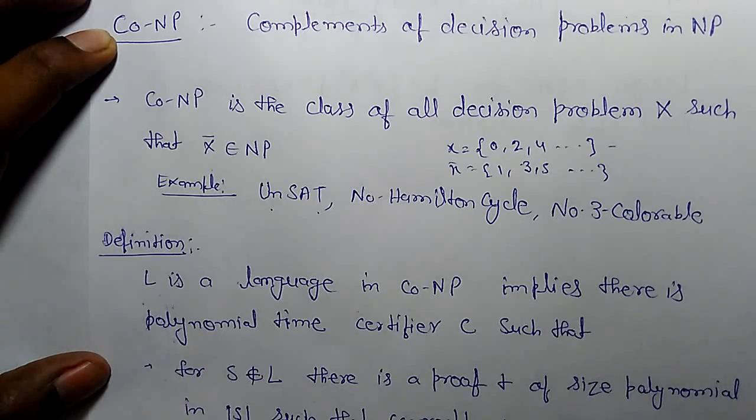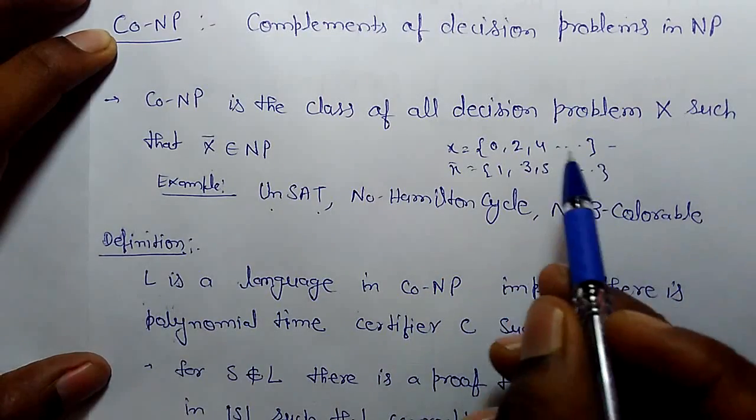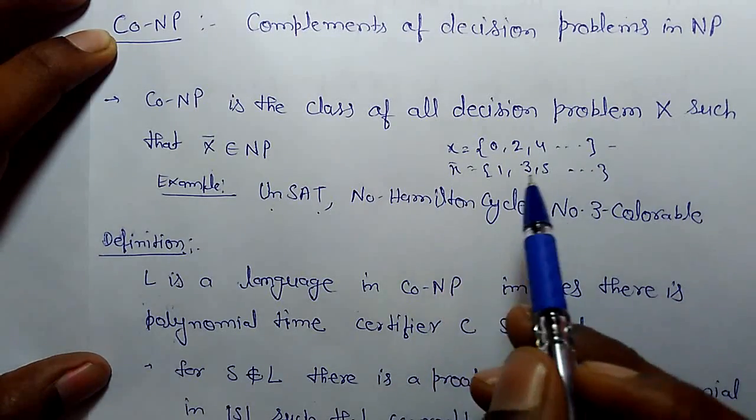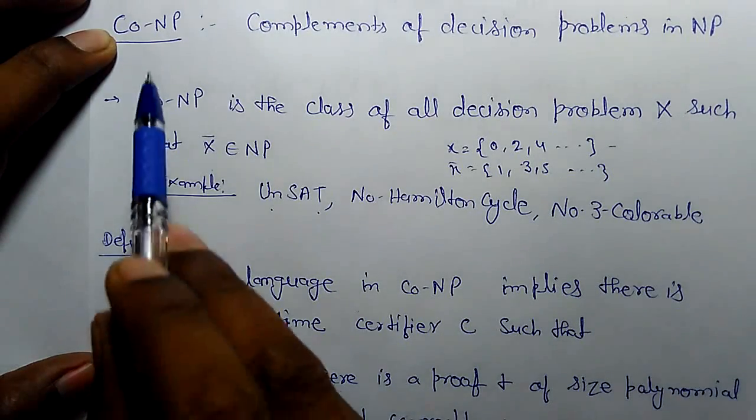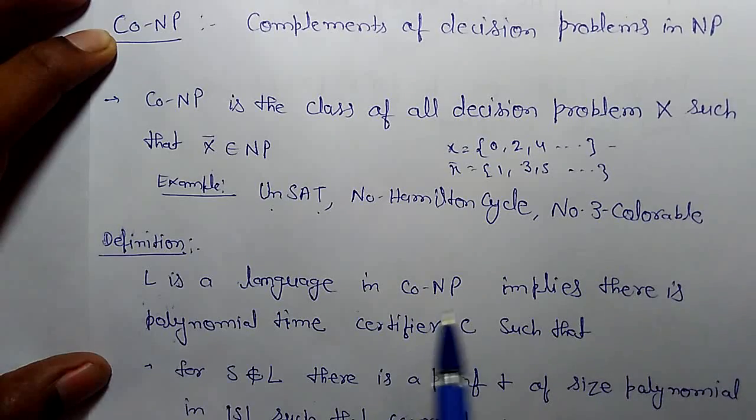So what is x-complement? If x is a set of even numbers, then x-complement would be odd numbers. Examples of Co-NP include UNSAT, No Hamilton Cycle, and No 3-Colorable.